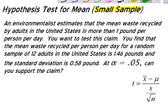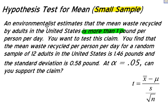One of the things I like to do is highlight some of the important information in the problem. 'More than' is important. You want to test this claim. You find that the mean waste recycled per person per day for a random sample of 12 adults in the United States is 1.46 pounds, and the standard deviation is 0.58 pounds. At alpha equals 0.05, can you support the claim?